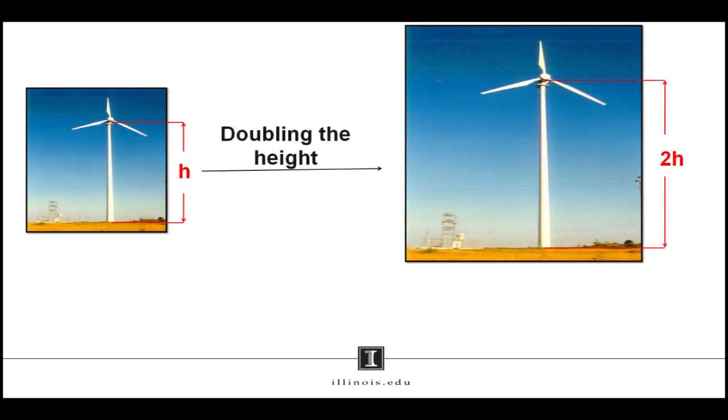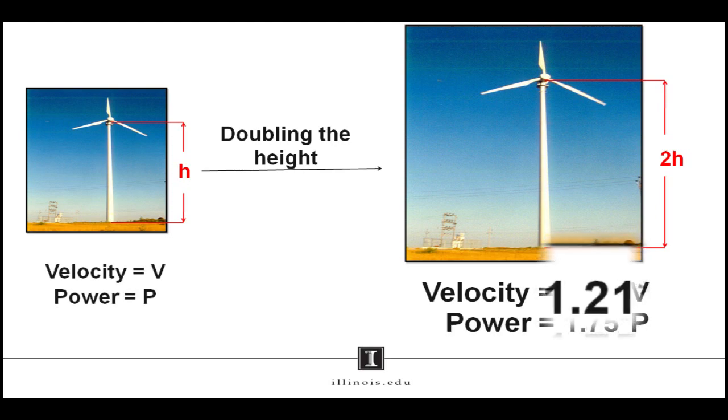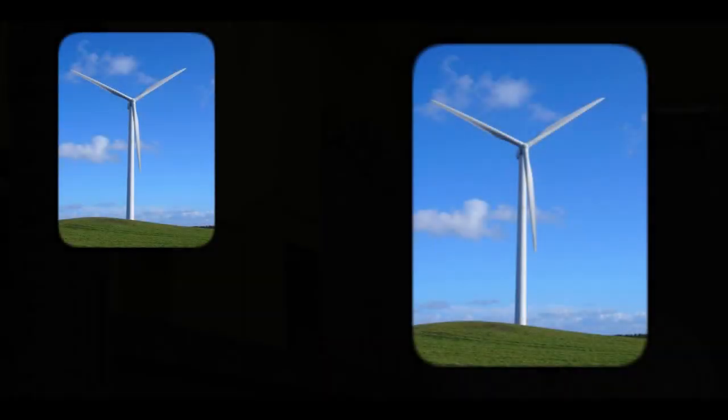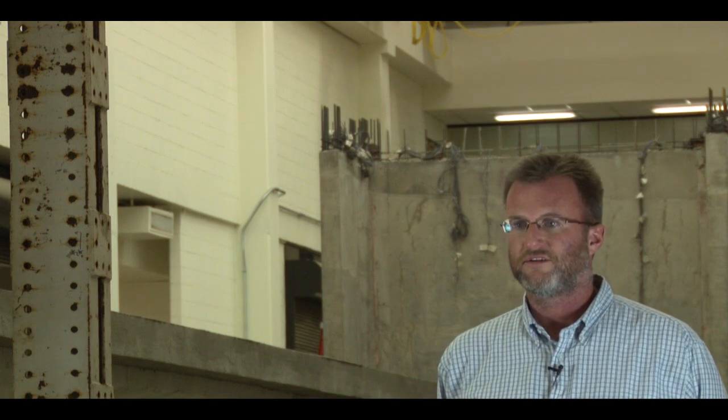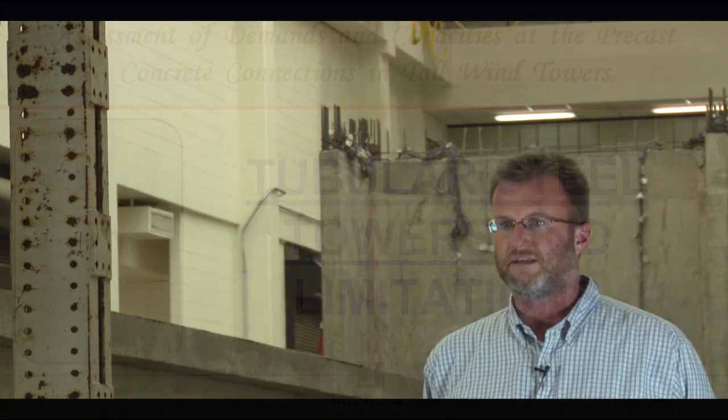Therefore, a doubling of the height of a wind tower would result in an increase in wind velocity by about 20% and power produced by approximately 75%. Thus, increasing the heights of wind towers and the sizes of wind turbines is clearly a part of the solution to the problem of producing more energy using renewable sources to satisfy the world's increasing needs.